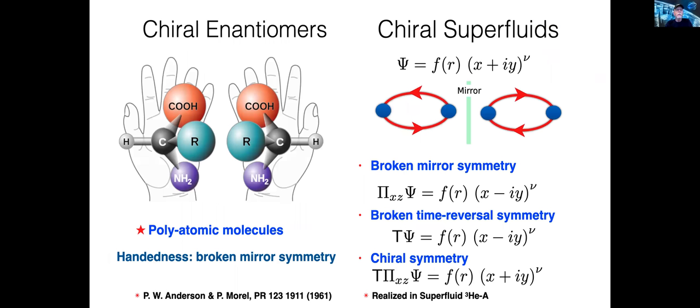Chiral enantiomers are mirror-reflected polyatomic molecules, i.e., left or right-handed versions of the molecule. Diatomic molecules, in particular Cooper pairs of helium-3 or electrons, can break mirror symmetry and form mirror-reflected versions of one another if the two atoms are in motion in their ground state.